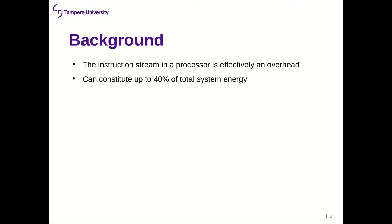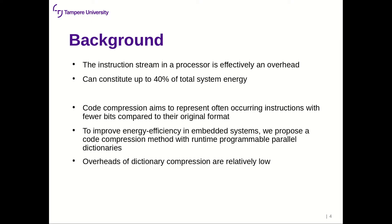The instruction stream in a processor can effectively be thought of as an overhead — it doesn't actually contribute to the computations. The instruction stream can constitute up to 40% of total system energy in some cases. The field of code compression aims to represent often-occurring instructions with fewer bits compared to their original format. Overheads of dictionary compression are relatively low when compared to statistical methods such as Huffman.